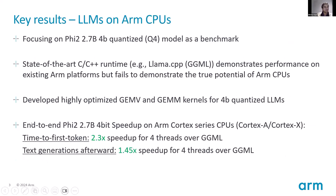Given all these advantages, the question arises: what is the potential performance of LLMs on ARM CPUs deployed in smartphones and edge devices? Some key results: we use Microsoft's Phi-2 2.7 billion parameter 4-bit quantized model as our benchmark. We use a state-of-the-art C++ runtime such as llama.cpp. We recognize that the baseline kernels cannot exploit the full potential of ARM CPUs, so we developed highly optimized matrix-vector multiplication and matrix-matrix multiplication kernels for 4-bit quantized LLMs, demonstrating a 2.3x to 4.5x speedup over the baseline C++ runtime.